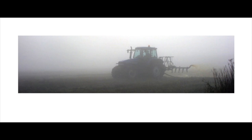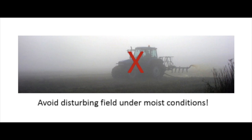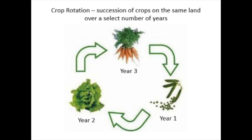Field disturbances should be avoided when the crops are wet as it can help spread the spores throughout the field. The pathogen can survive in plant debris for up to two years, so crop rotations of at least two years are recommended.